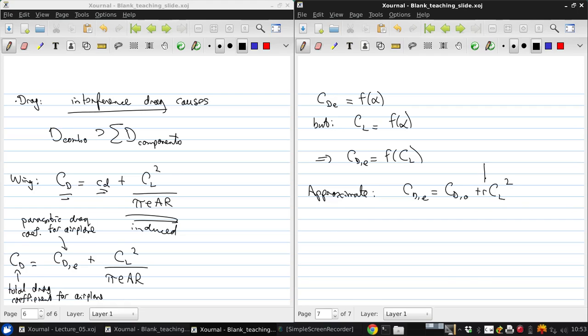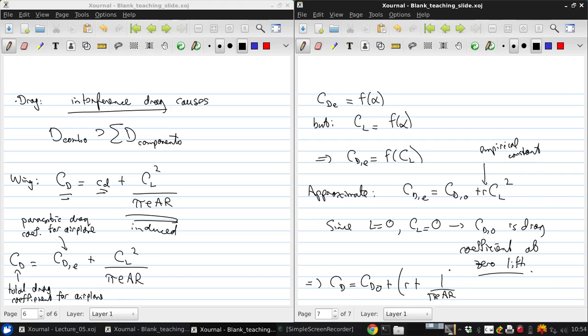Where here, R is some empirical constant. So that means that CDE is our parasite drag coefficient for the whole aircraft. To try to interpret what this term means, since if we have zero lift, the lift coefficient is zero, then that means that CD0 is the drag coefficient at zero lift. So the drag coefficient for the whole airplane is the drag coefficient at zero lift plus this R factor plus 1 over pi e AR times CL squared.